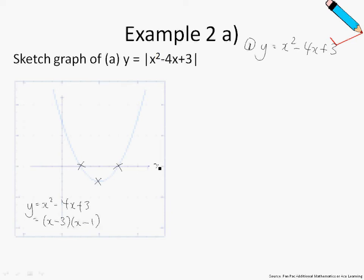When the graph cuts the x-axis, your y coordinate is 0. So 0 equals to x minus 3 times x minus 1. Therefore x is just 1 or 3.